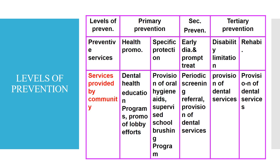Services provided by the community: under primary prevention and health promotion, dental health education programs and lobby efforts. Under specific protection, provision of oral hygiene aids and supervised school brushing programs — these are what we do in community camps. Secondary prevention includes periodic screening and referral if decay is found, as is done in dental camps. Tertiary prevention includes disability limitation and rehabilitation through provision of dental services.